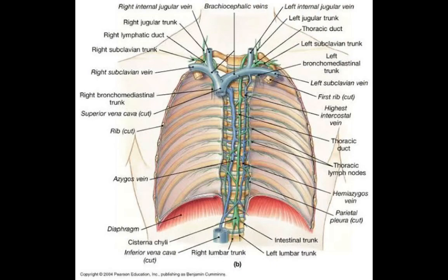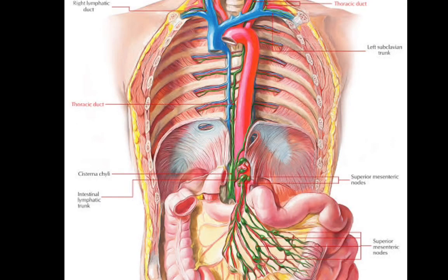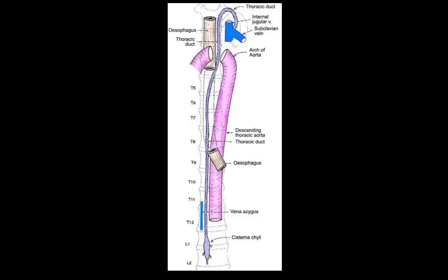The characteristic features of the thoracic duct are that it is beaded in appearance and is provided with numerous valves. The measurements of the thoracic duct are about 45 centimeters in length and about 0.5 centimeters in width.